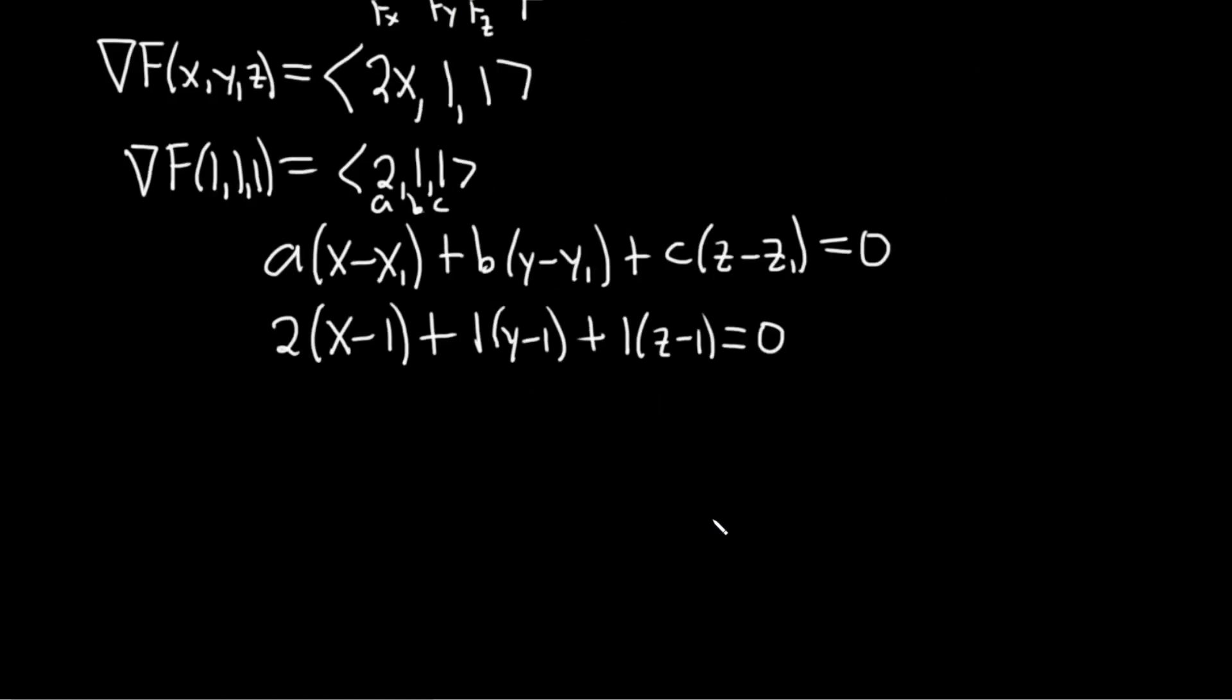You could leave it like this. I usually prefer to leave it like this. But I'll go ahead and just finish it up. 2 times x is 2x. 2 times negative 1 is negative 2. 1 times y is y. 1 times negative 1 is negative 1. 1 times z is z. 1 times negative 1 is negative 1. And that's equal to 0.